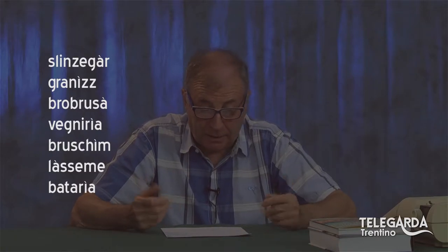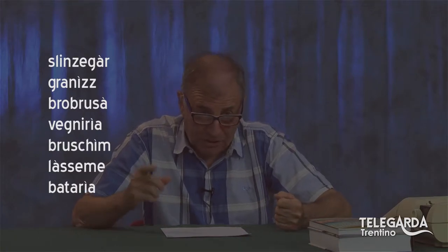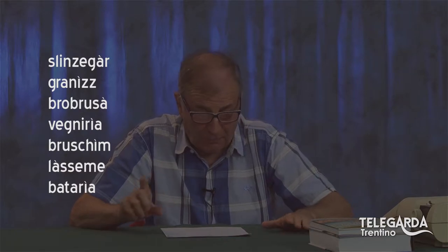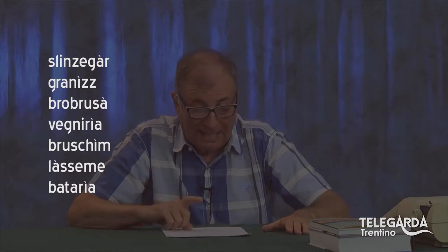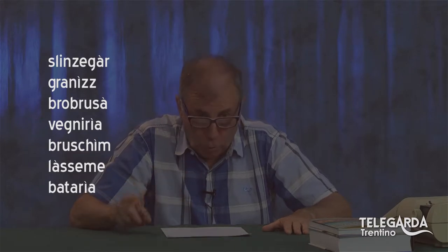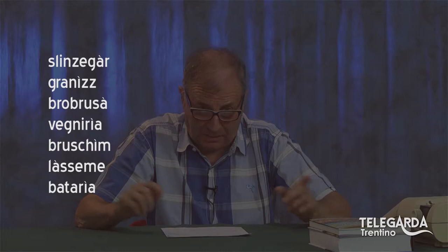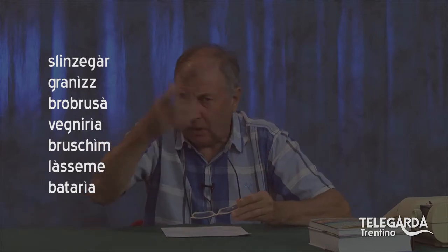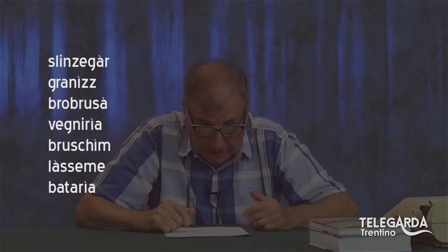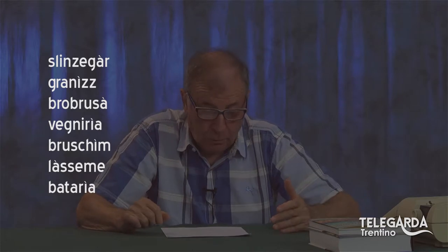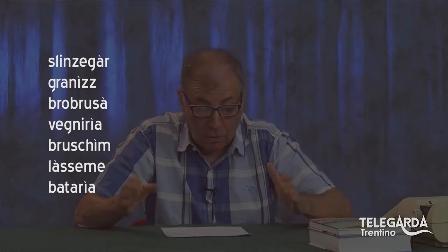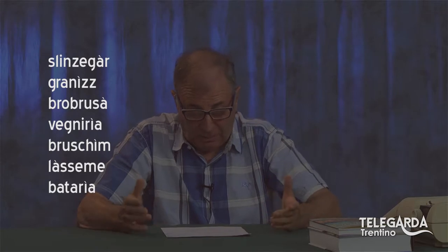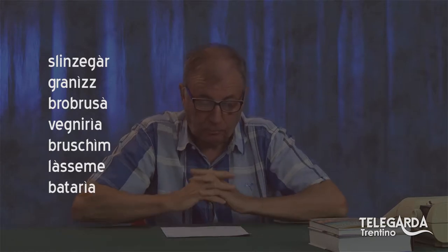Arriviamo all'assème: col significato di 'lasciami tu'. Se dovessi dire 'lasciatemi voi', metterei l'accento sulla E. L'assème è anche accento fonico chiuso, non l'assème. Vedete l'importanza dell'accento tonico da una parte o dall'altra: cambia addirittura la persona del verbo. E poi battarìa — non battàrìa — battarìa: un bel accento tonico sulla I. Quindi capite l'importanza dell'accento tonico.